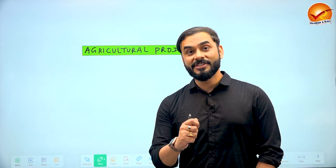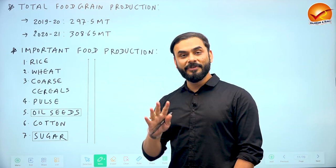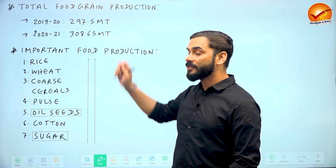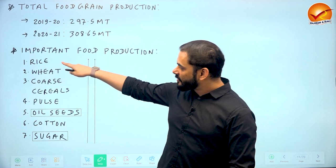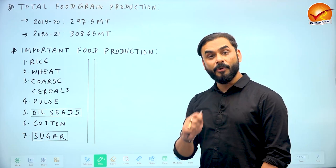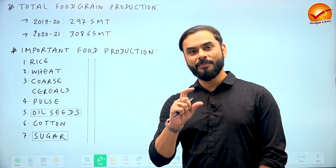Now let us look at agricultural production trends in India. Around 2019-20, total food grain production was 297.5 million tons, and in 2020-21 it increased to 308.65 million tons. Important food grains include rice, wheat, coarse cereals, pulses, oilseeds, cotton, and sugar. In this economic survey, particular importance has been given to oilseeds and sugar, so we will discuss those in detail.